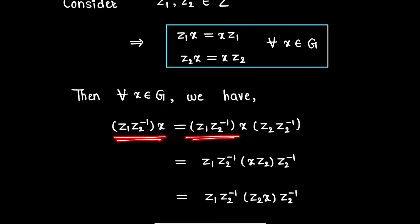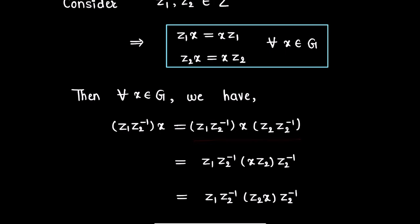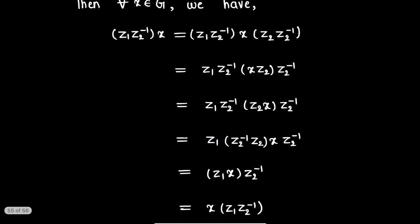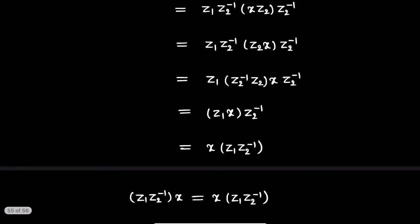This can be written as z1·z2⁻¹·x·z2·z2⁻¹, since we insert the identity element written as z2·z2⁻¹. Using associativity in group G, this expression can be rewritten. As z2 is an element of the center, x·z2 can be written as z2·x. Then z2⁻¹·z2 becomes identity and drops out. As z1 is an element of the center, z1·x becomes x·z1, and using associativity we obtain the simplified expression.